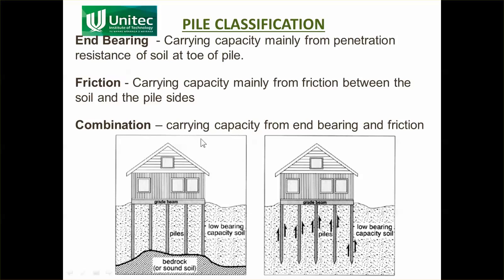Pile classification — the way piles work — comes in two different ways. First, end bearing, where the pile transfers the load down to a sound soil, bedrock, or some strong material that can support the load. In a purely end-bearing pile, the whole load would be transferred down to the bedrock. There is also friction — the friction between the soil and the pile itself. Sometimes you can corrugate the pile to increase that friction, but usually it is a combination of end bearing and friction.